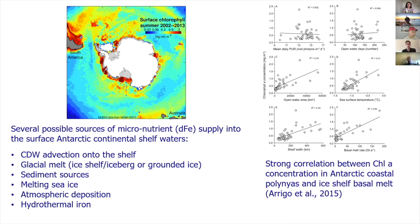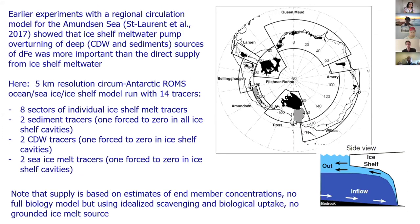A study by Kevin Arrigo and others did correlations between satellite estimates of chlorophyll and several polynias around the coast of Antarctica and different physical parameters — number of days the polynia is open, integrated light, sea surface temperature. The strongest correlation by far was between satellite chlorophyll and the basal melt rate of adjacent ice shelves. This helped reinforce the idea that ice shelves are really important to primary production, perhaps because they're supplying dissolved iron.